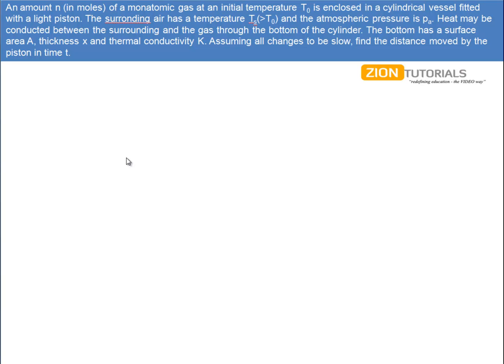The amount N of a monoatomic gas at an initial temperature T0 is enclosed in a cylindrical vessel fitted with a light piston. The surrounding air has a temperature Ts and the atmospheric pressure is PA. Heat may be conducted between the surrounding and the gas through the bottom of the cylinder. The bottom has a surface area A, thickness X, and thermal conductivity K. Assuming all changes to be slow, find the distance moved by the piston in time T.